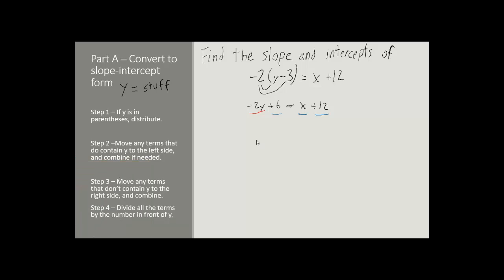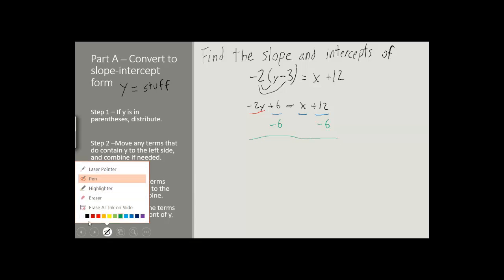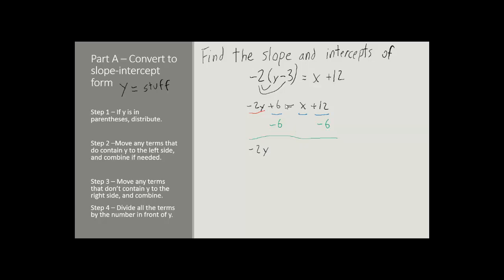I'm going to mark this in green. Since it's plus 6, we do the opposite. We say minus 6. And now we just bring down whatever we can. The 2y that's in the red underline is not changed. It's still minus 2y. The plus 6 and the minus 6 cancel out. Then we have our equals. And then x plus 12 minus 6 gives us plus 6.